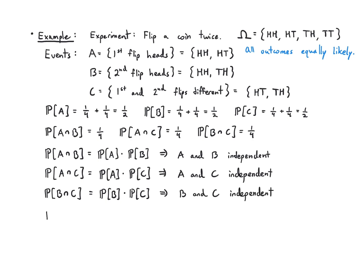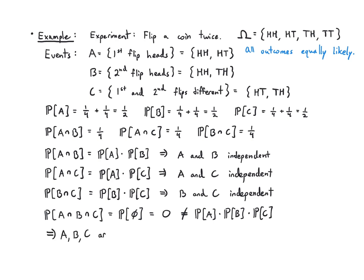But what about P(A∩B∩C)? The only thing A and B share is HH, and HH does not appear in C, so A∩B∩C is empty with probability 0. But P(A)·P(B)·P(C) = (1/2)³ = 1/8. Since 0 ≠ 1/8, A, B, and C are not independent as a triple.